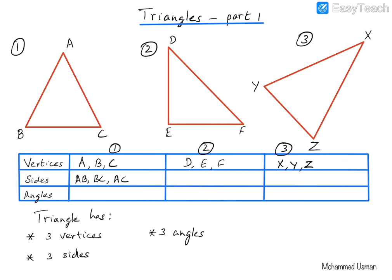Similarly, for triangle number two, the sides are DE, EF and DF. And for triangle number three, the sides would be XY, YZ and XZ. So we have three different sides for each of the triangles.